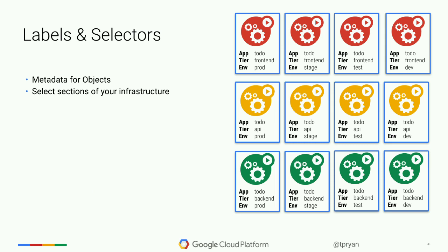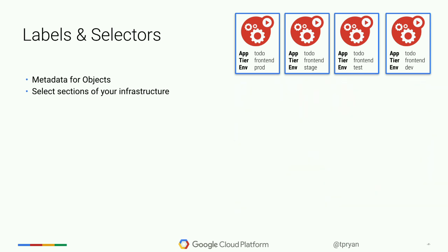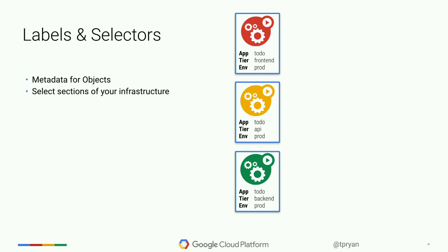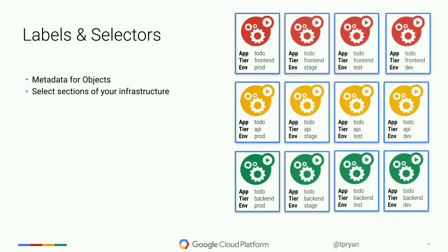Labels and selectors allow you to add arbitrary metadata to your configurations. They allow you to select things into services and other roles. For example, you could take all the prod machines and run them into a service, or specify all prod front-end machines as one service and all prod staged machines as another. You can run your entire environment in the same cluster and get near-perfect parity between environments.